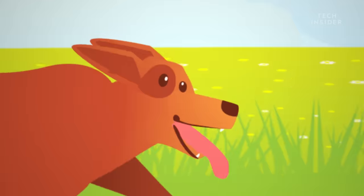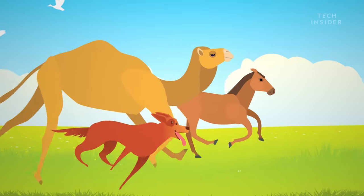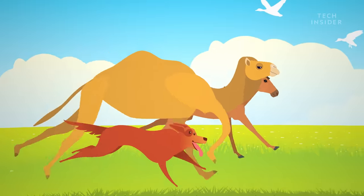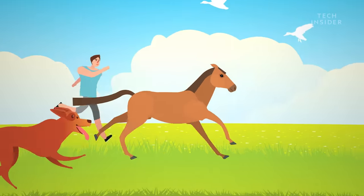In contrast, dogs rely on panting to cool down, and other animals, like horses and camels, also sweat, but less effectively. As a result, they overheat faster and must slow down sooner.